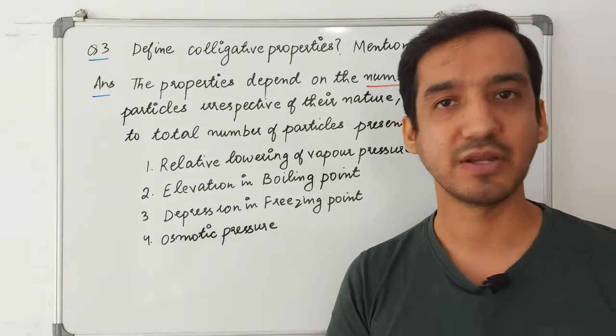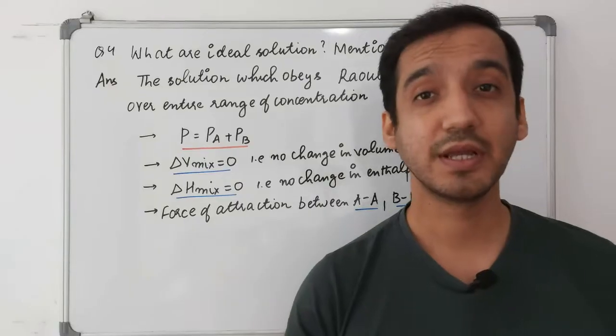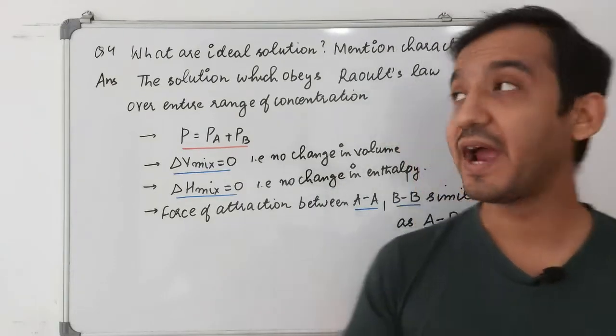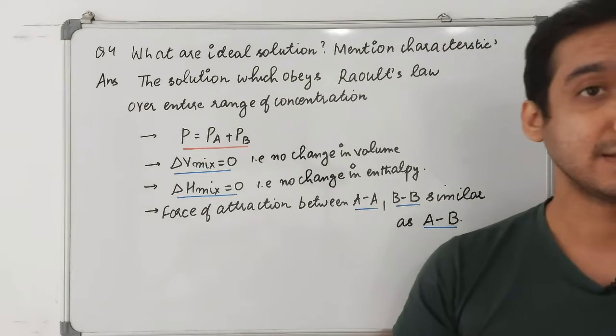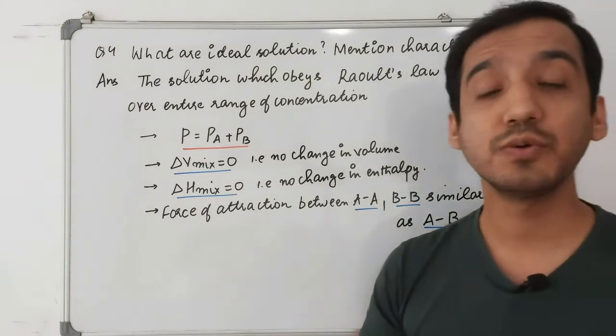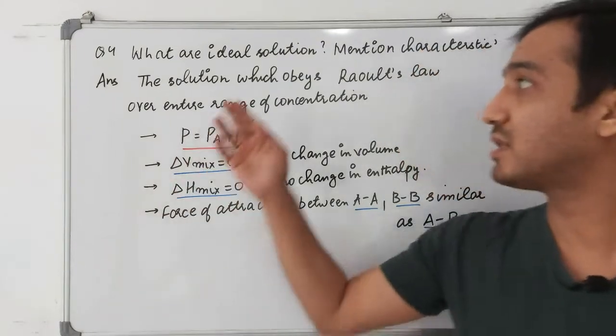The four types of colligative properties are: (1) relative lowering of vapor pressure, (2) elevation in boiling point, (3) depression in freezing point, and (4) osmotic pressure.